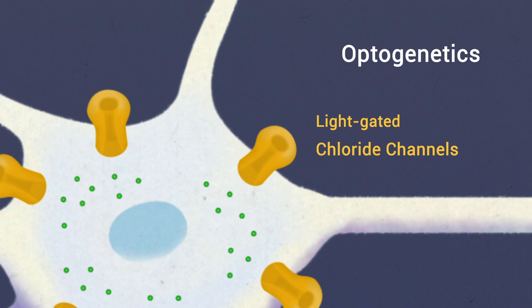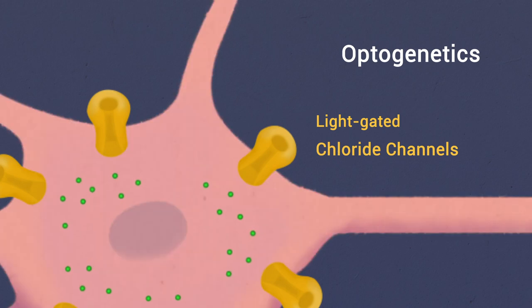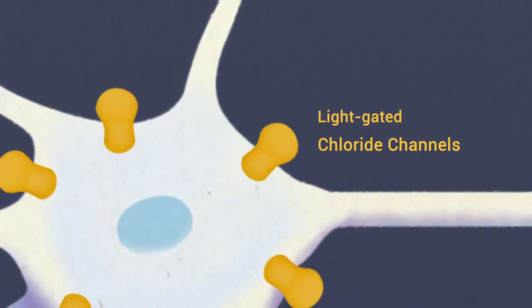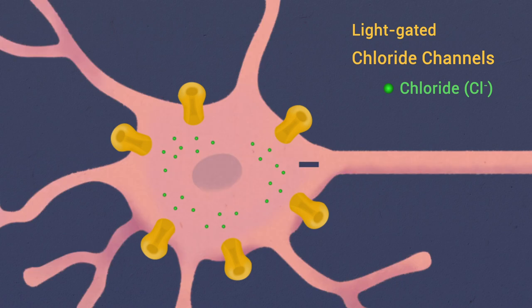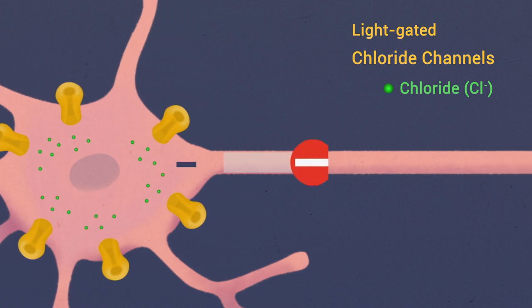Light-gated chloride channels are used to inhibit the activity of neurons. Indeed, activating them allows chloride ions to enter the neuron, leading to a more negative charge inside of the cell relative to the outside and thus to an inhibition of the neuron, making it less likely to fire.